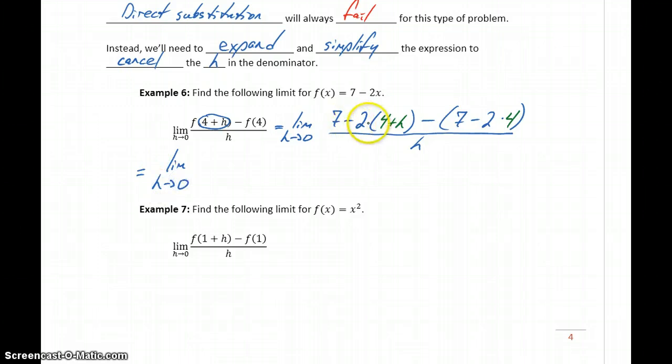We can start to expand this out, distribute the 2 through, distribute that negative through, combine any like terms. So this will give us 7 minus 8 minus 2h minus 7, or negative 1 times negative 2 times 4, so plus 8.